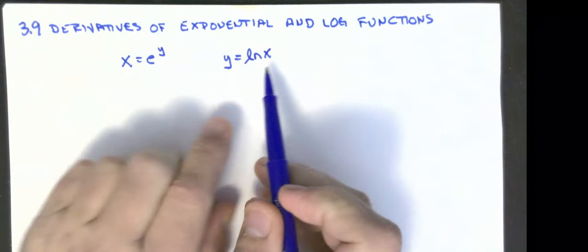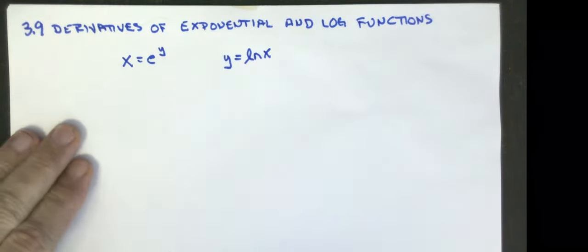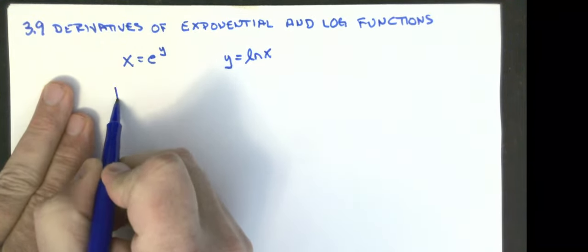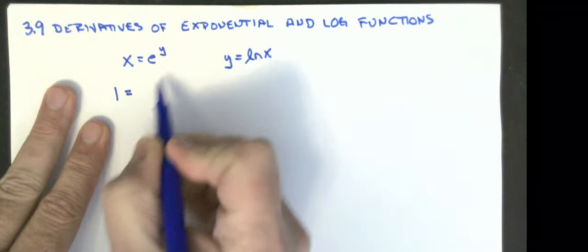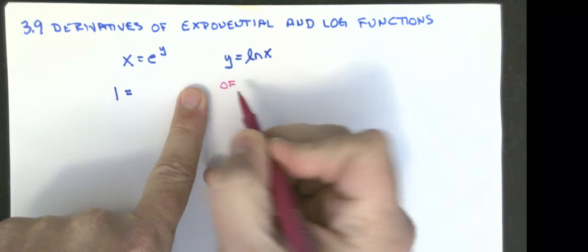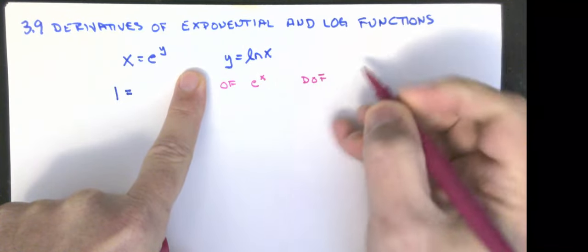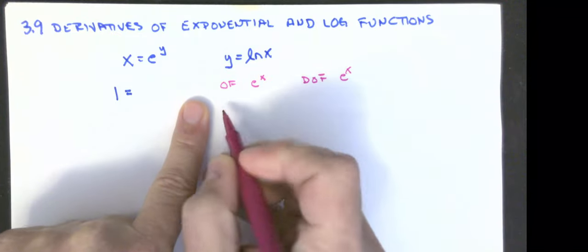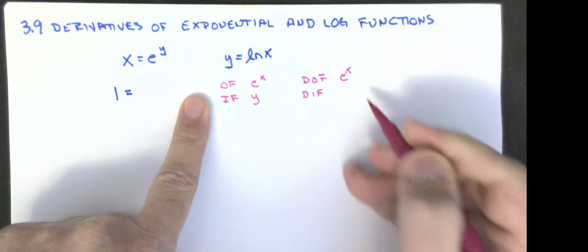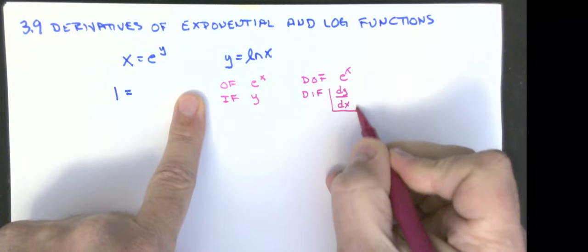So if I wanted to find the derivative of the natural log of x, I could rewrite it as x equals e to the y and then do implicit differentiation on it. The derivative of x is just one. The derivative of e to the y is a chain rule problem, where my outside function is e to the x. The derivative of the outside function is just e to the x. My inside function is y, and the derivative of the inside function is dy/dx. If I'm finding the derivative, I'll end up solving for dy/dx.